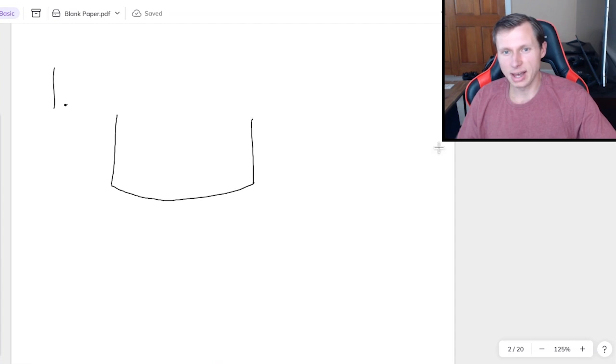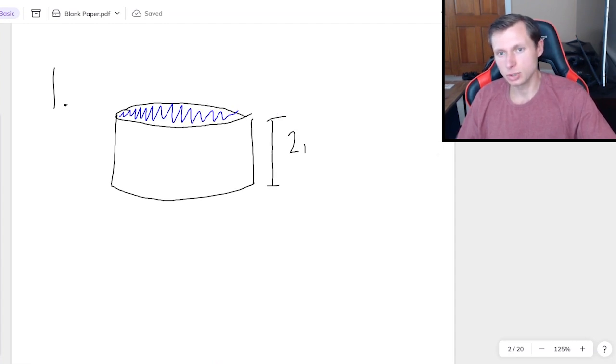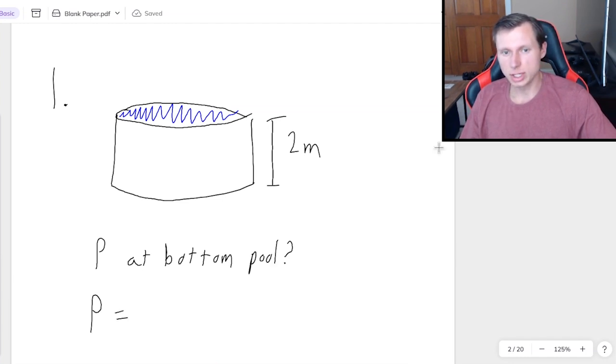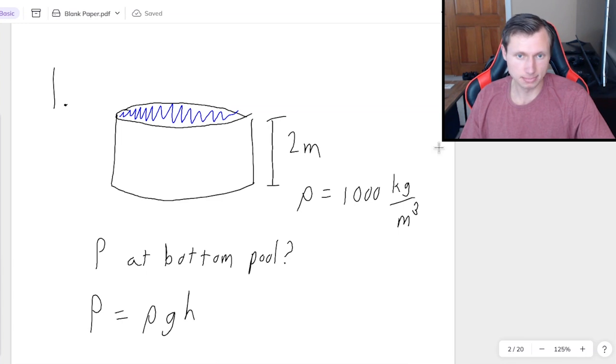So for number one I have an above ground pool. Let's say that pool is two meters high. And I would like to know the atmospheric pressure p at the bottom of the pool. So here's how we're going to solve this. First writing the equation p equals rho g h is a good idea. I also need to give you the density of water, which we are going to say is approximately 1000 kilograms per meter cubed, which is the units I want.